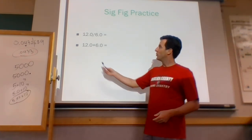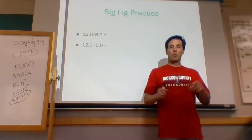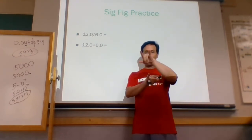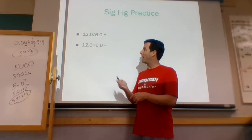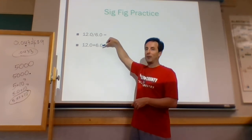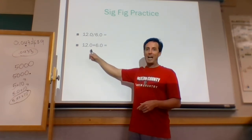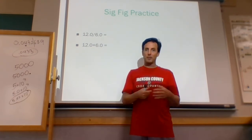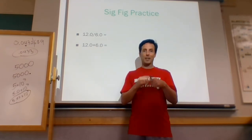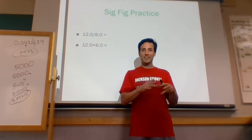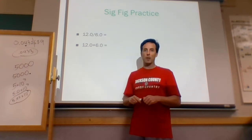What about 12.0 plus 6.0? If I add them, 12.0 on top and 6.0 on the bottom — if I got confused and applied the multiplication rule, I'd think I need 2 sig figs, but that's not right. With addition I round based on decimal places. Both numbers have one decimal place, so when I add them I keep one decimal place. The answer is 18.0.